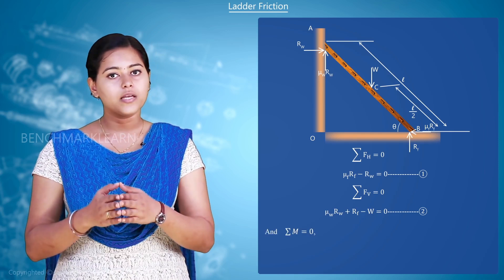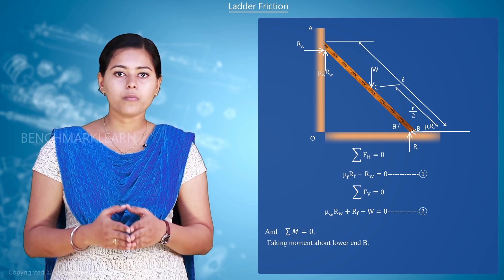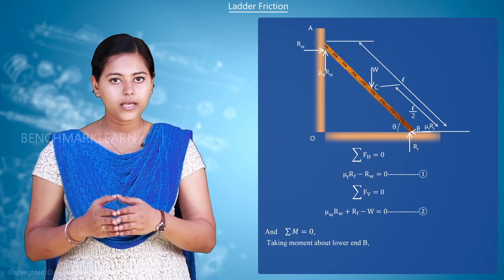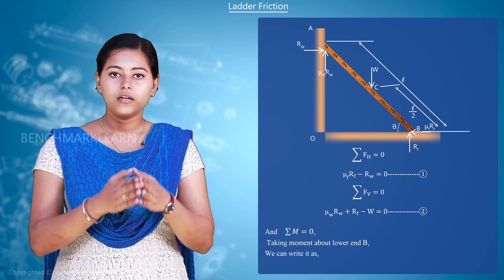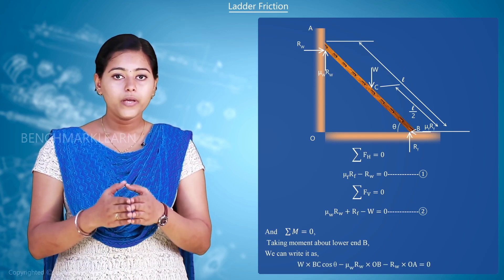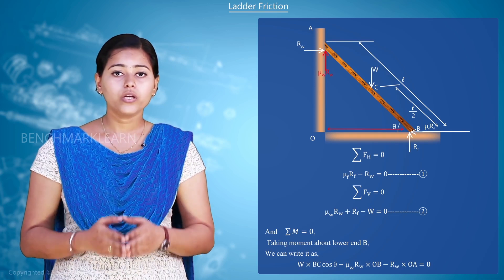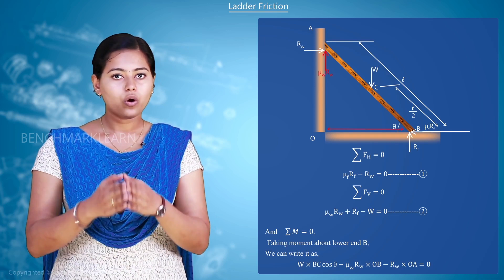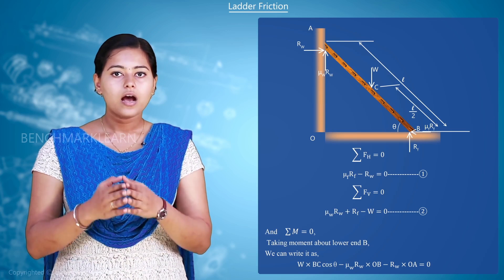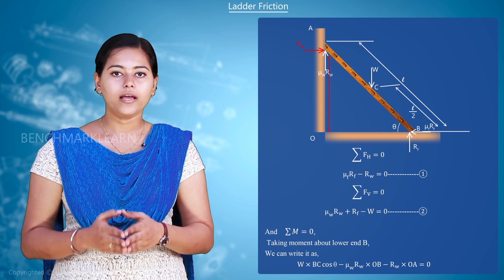sigma M is equal to 0. Now, taking moment about the lower end B, we can write W into BC cos theta minus mu W Rw into OB minus Rw into OA equal to 0.